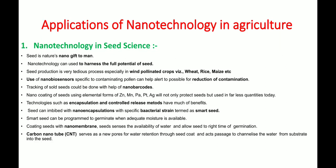The first specific application is nanotechnology in seed science. The seed is nature's nano gift to man, and nanotechnology can be used to harness the full potential of the seed, improving crop yield. The seed process is critical especially in wind-pollinated crops such as wheat, rice, and maize, where contamination can occur. Nanobiosensors are used to measure the biochemical changes and biological activities occurring in crops.